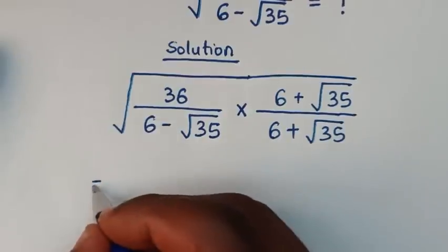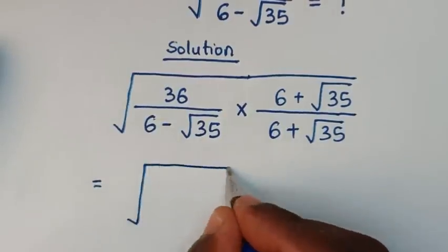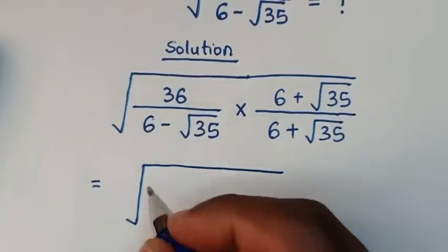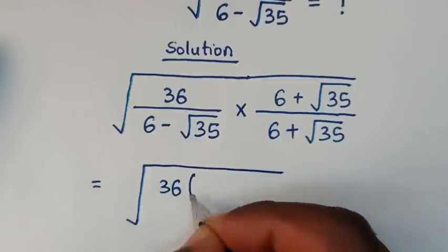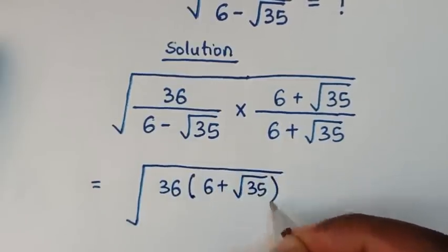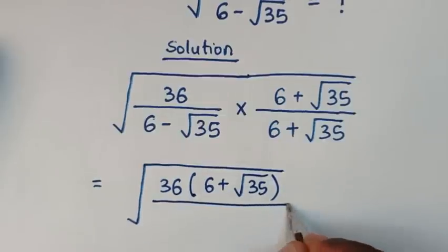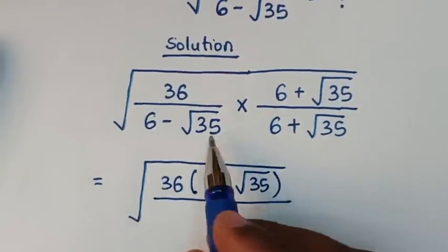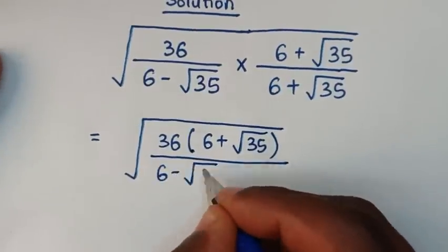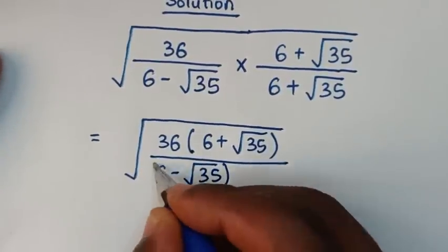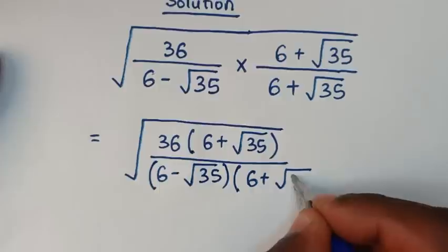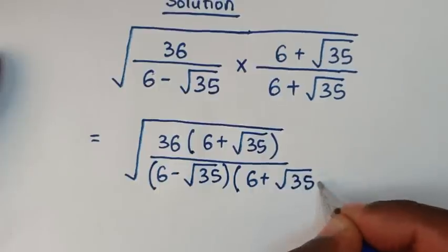Then it will be equal to square root of this times this. So it will be 36 bracket, 6 plus square root of 35 bracket, over this times this — so it will be 6 minus square root of 35 bracket, times 6 plus square root of 35 bracket.